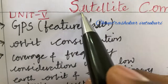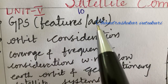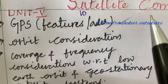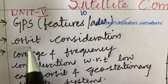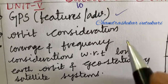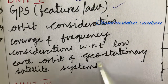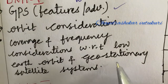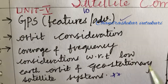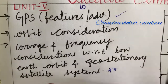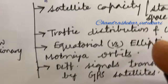The first important question — questions 10 and 11 in the question paper — is all about GPS features and its advantages. Orbit consideration is also key, and you are going to get one problem related to orbit for sure. Coverage and frequency consideration with respect to low Earth orbit and geostationary satellite systems is set as a top question which may occur in 10a or 10b this time, with short questions also being asked from this part.